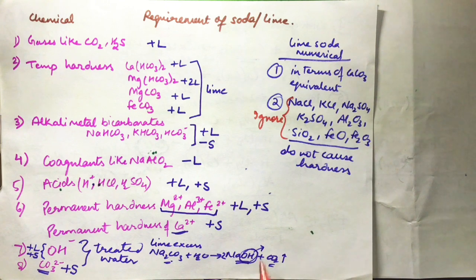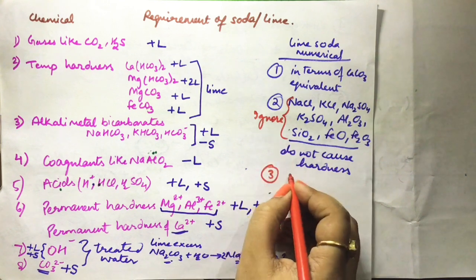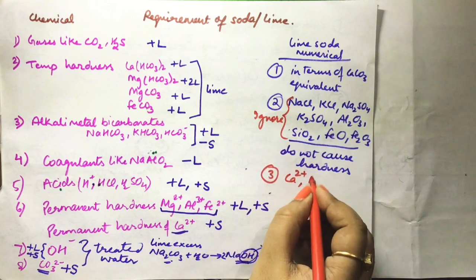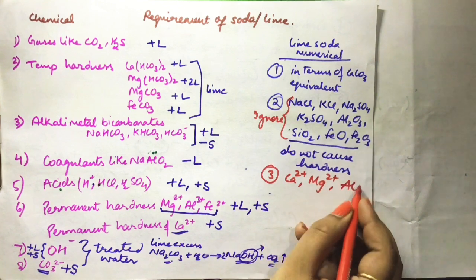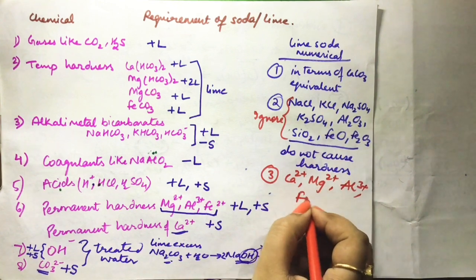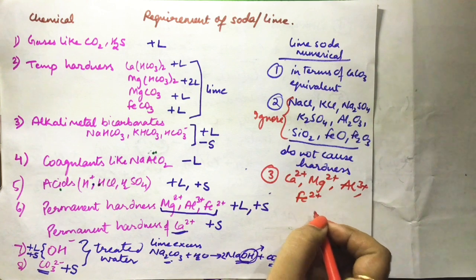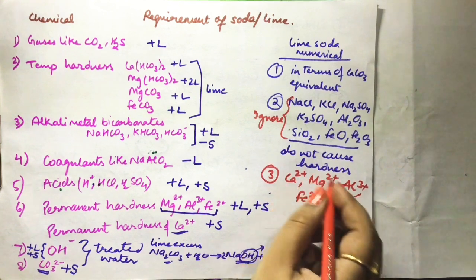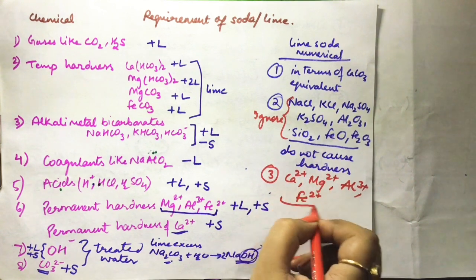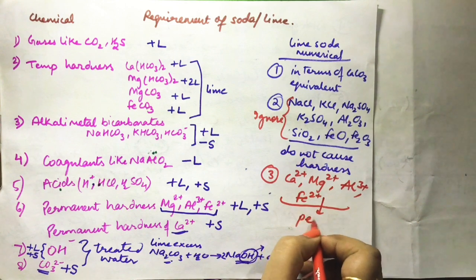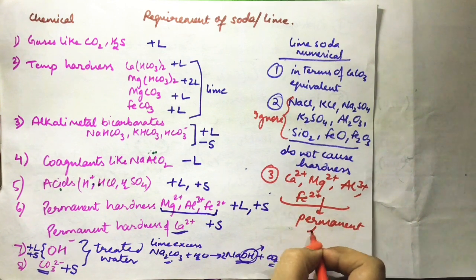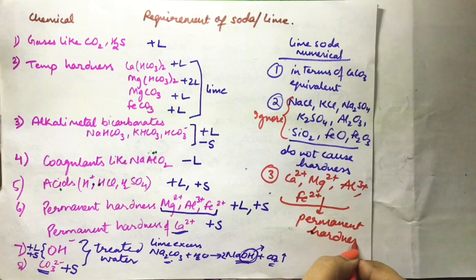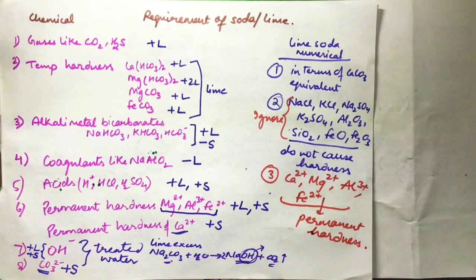Since these chemicals cause no hardness, we need to ignore them in calculations. The important thing is: if only Ca²⁺, Mg²⁺, Al³⁺, or Fe²⁺ ions are written with no anion, we consider them all as permanent hardness-causing ions.